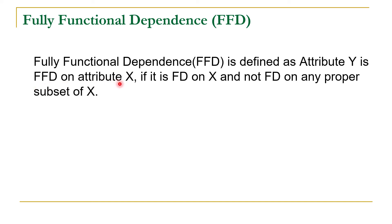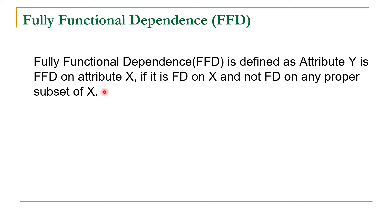on attribute X if it is functionally dependent on X and not functionally dependent on any proper subset of X. It means Y is functionally dependent on X, but it should not be functionally dependent on any proper subset of X.